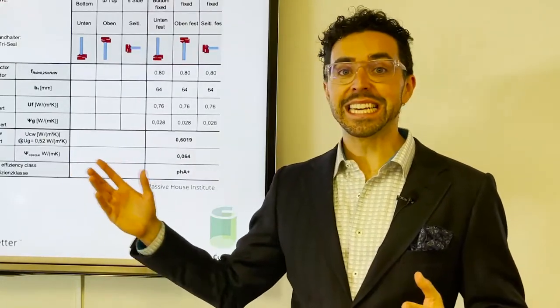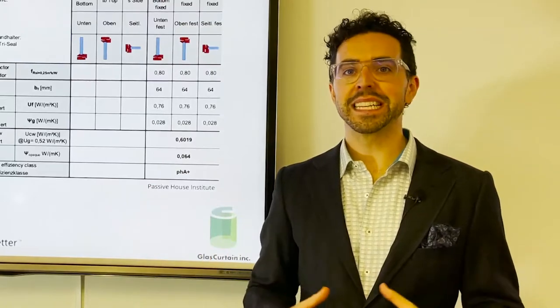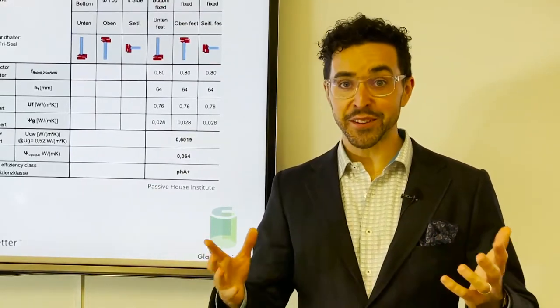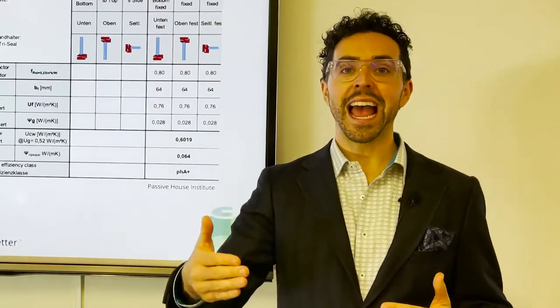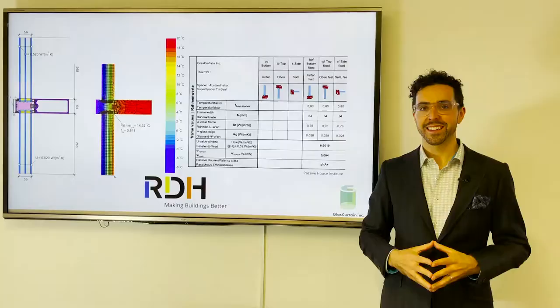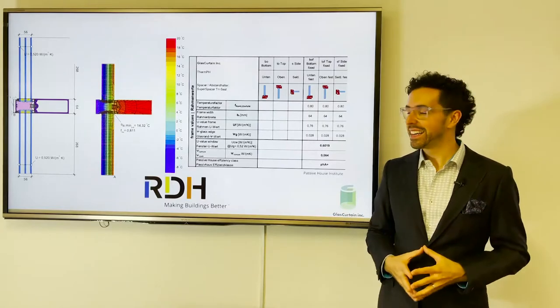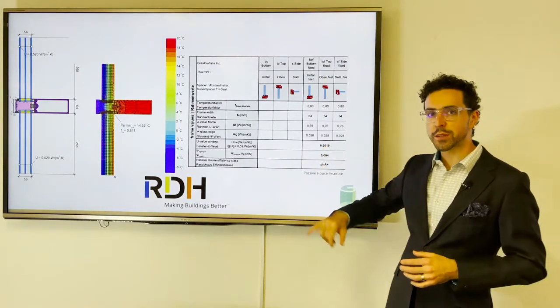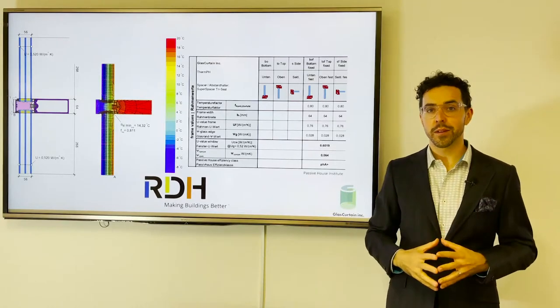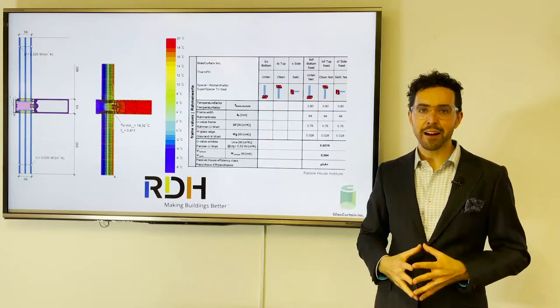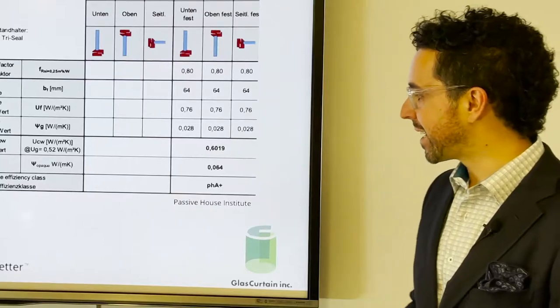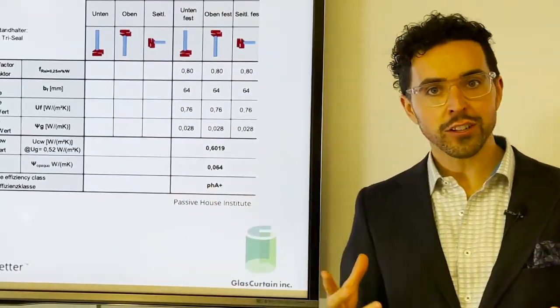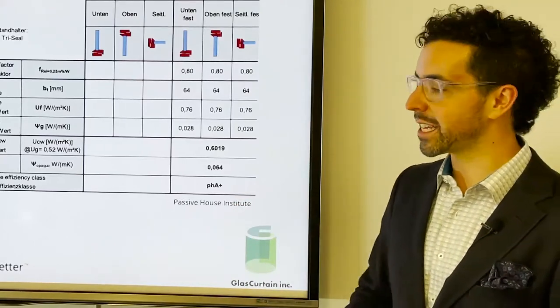According to the passive house standard, when we certified in 2019, we were the only system in the world to meet the standard. Almost two years later, we are still the only ones, which shows just how far ahead we've pushed. This is meeting 0.6 Watts per meter squared Kelvin overall system, which is about R9.5 for those using Imperial. PHA Plus is the passive house efficiency class, measuring air tightness. This is the highest standard possible.